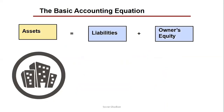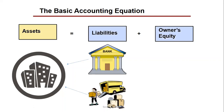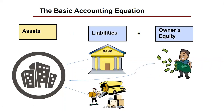The basic accounting equation is: Assets equal Liabilities plus Owner's Equity. To have a company, we need two sources of funding. First, liabilities — like banks that give us money, and suppliers that provide machines, equipment, and services.